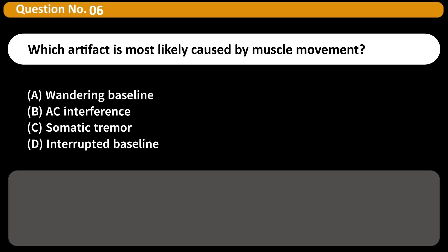Which artifact is most likely caused by muscle movement? A. Wandering baseline B. AC interference C. Somatic tremor D. Interrupted baseline Answer C. Somatic tremor appears as irregular, erratic spikes due to muscle activity like shivering.